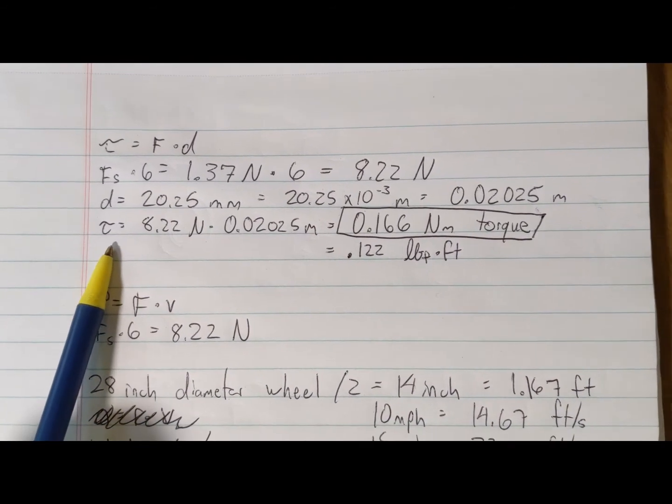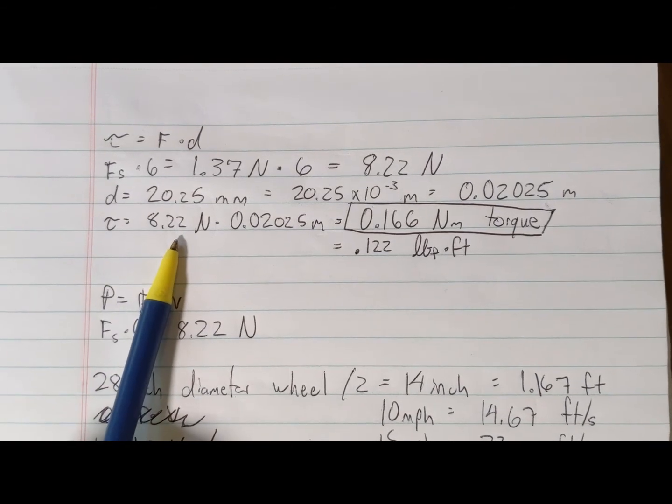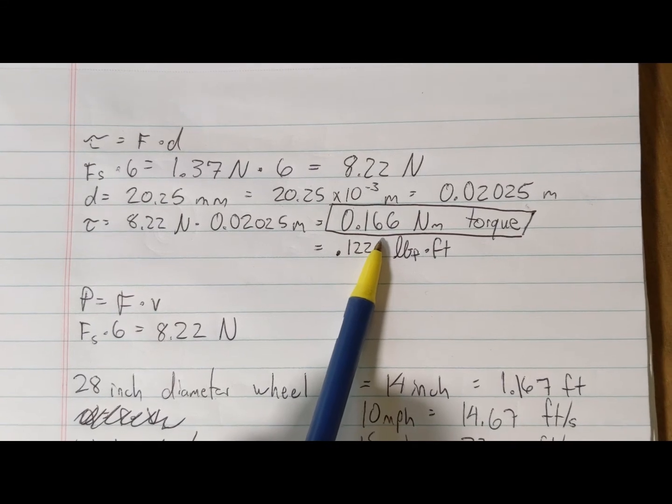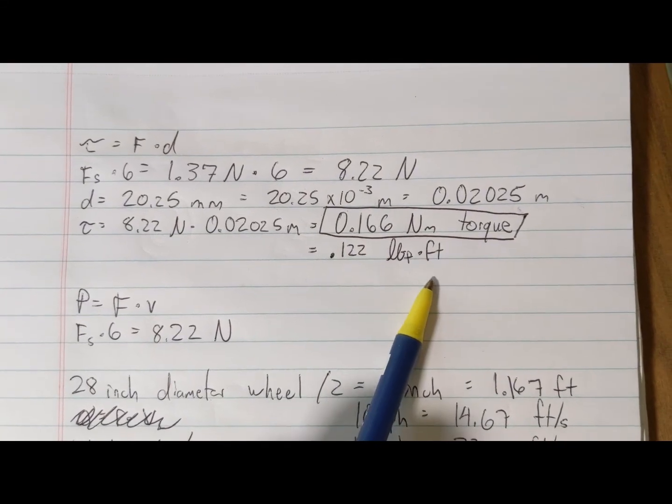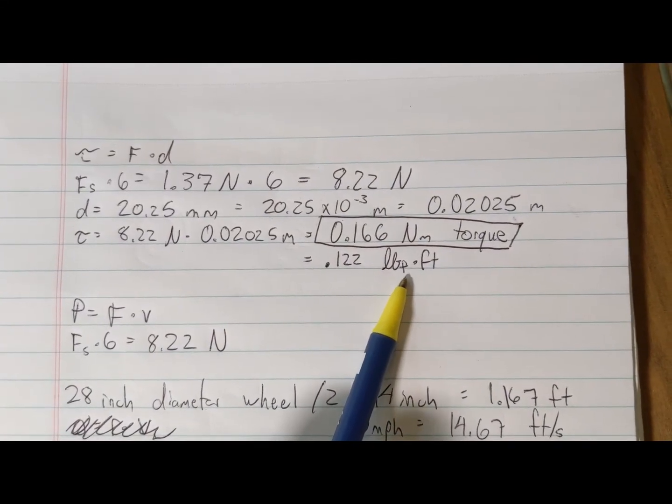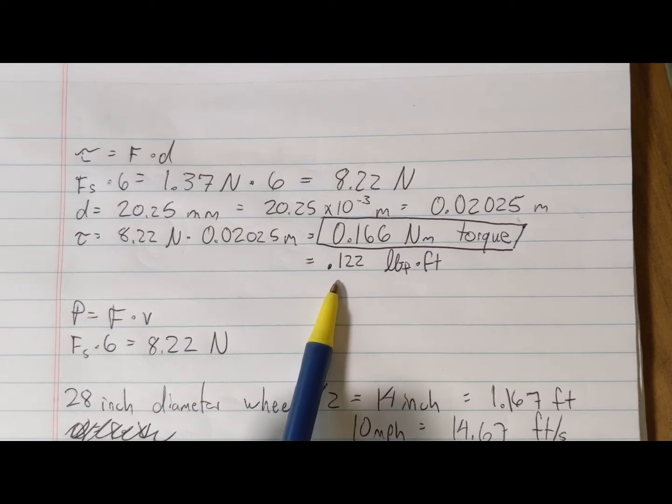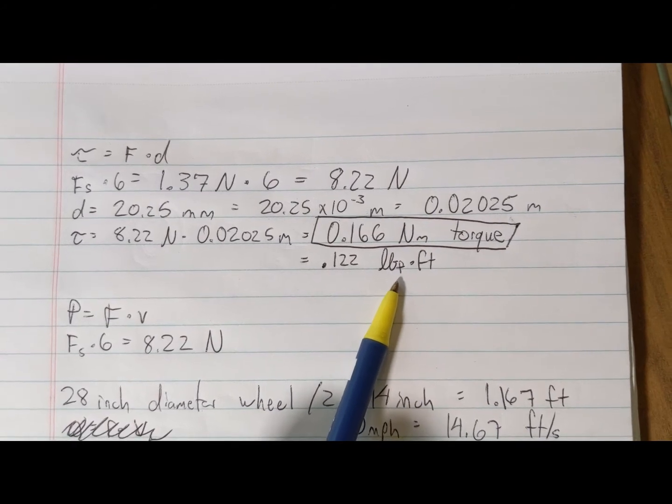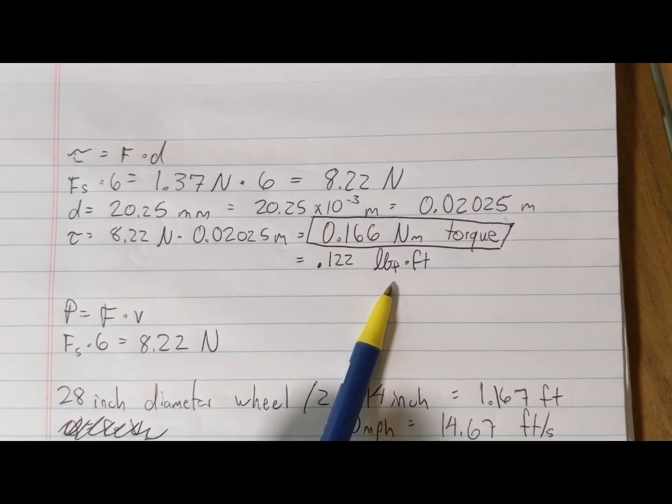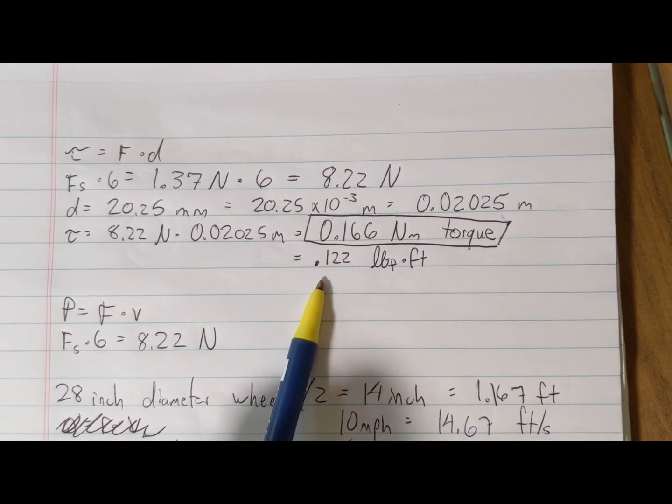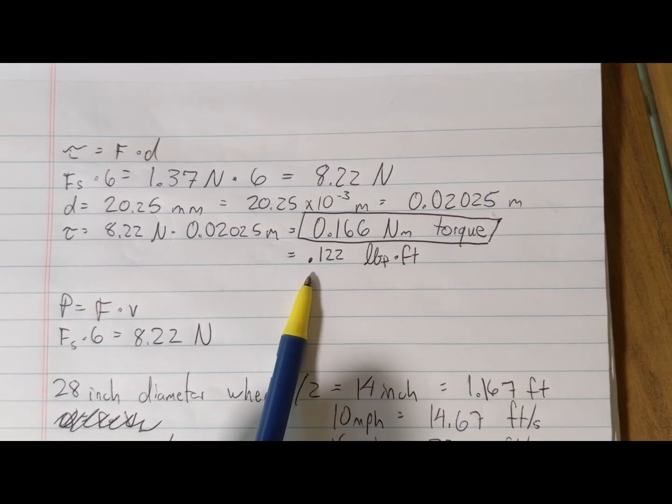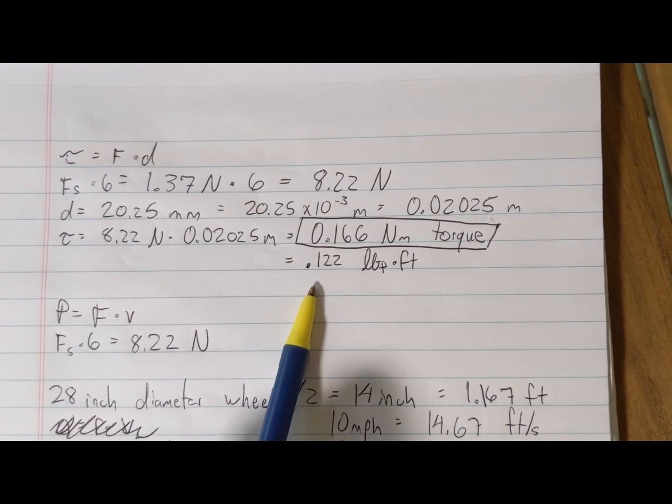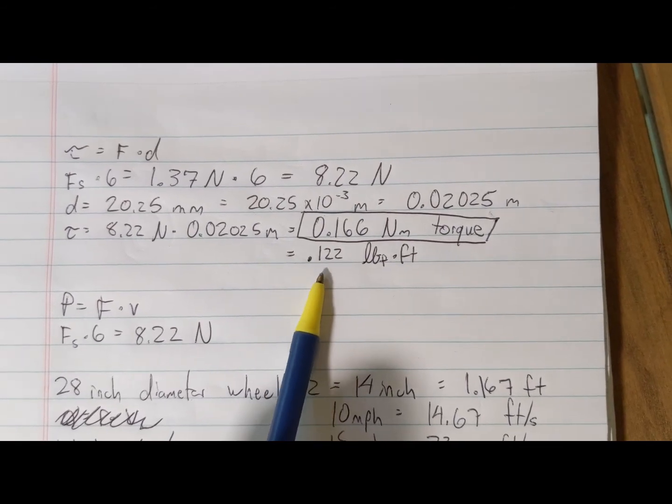From earlier, we measured the radius of the drive ring at 20.25 millimeters or 0.02025 meters. So our torque is the force times the distance and it equals 0.166 newton meters of torque, just from the springs, or about 0.122 pound foot of torque. That's pretty much nothing. If you had a one foot long wrench and you put down 0.12 pound force, you would get this number.